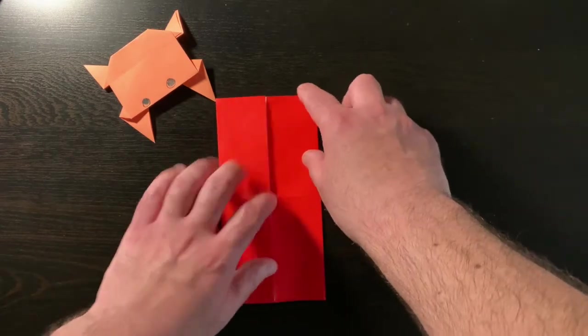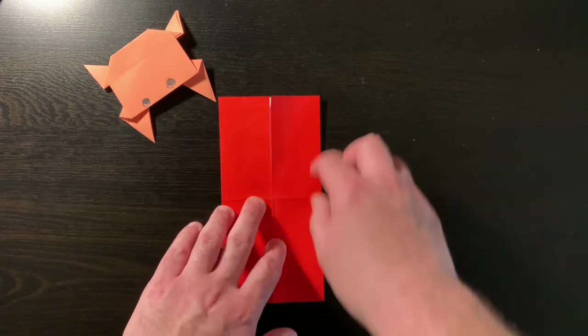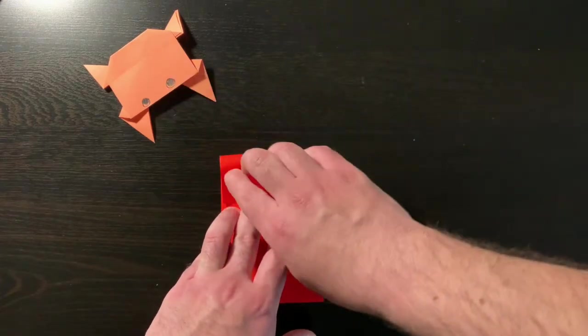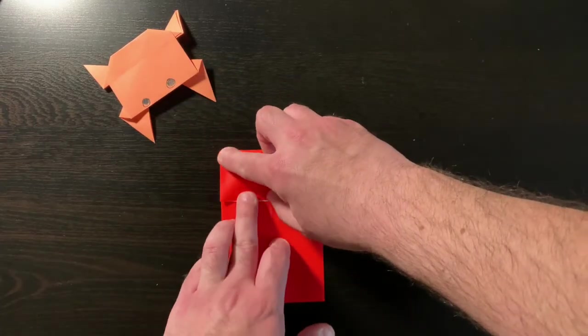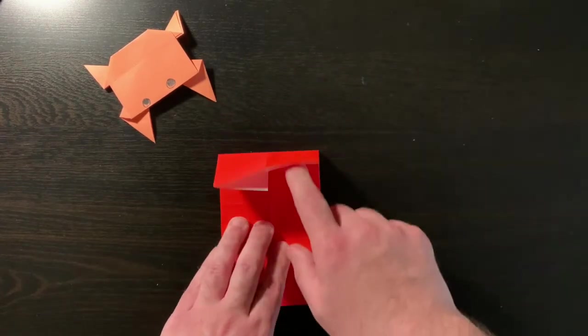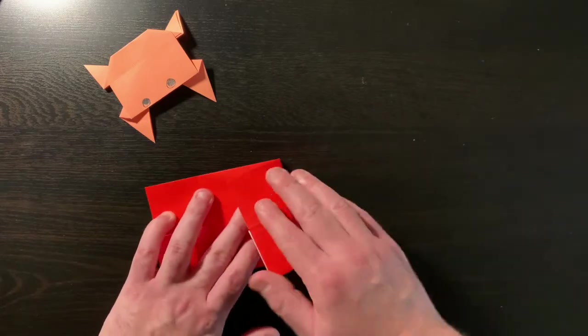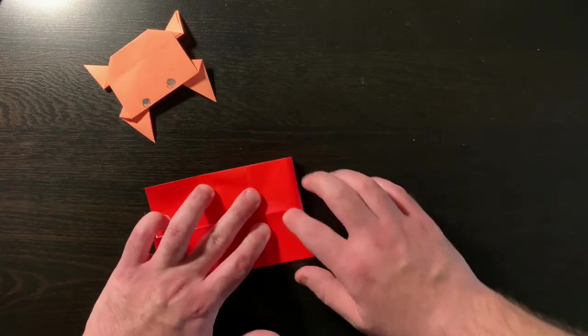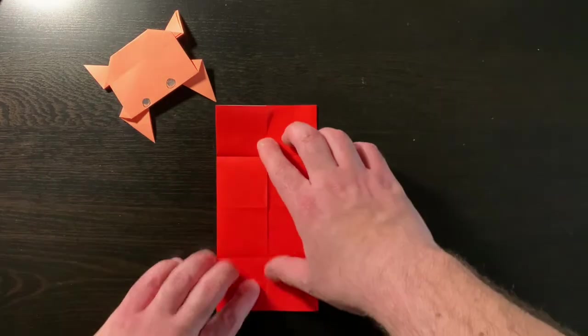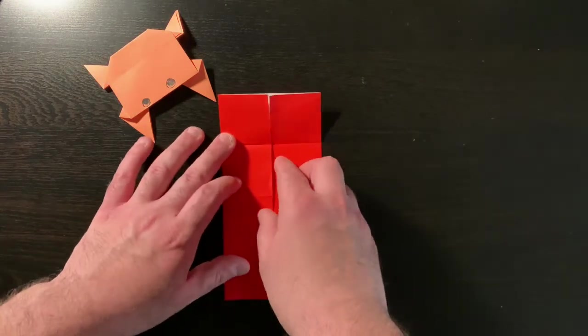Now that we have both sides folded in, let's take the bottom and the top and make them meet in the middle as well. We'll fold those down to meet in the middle and open it up. With it like this, we need to start making our crab's feet.